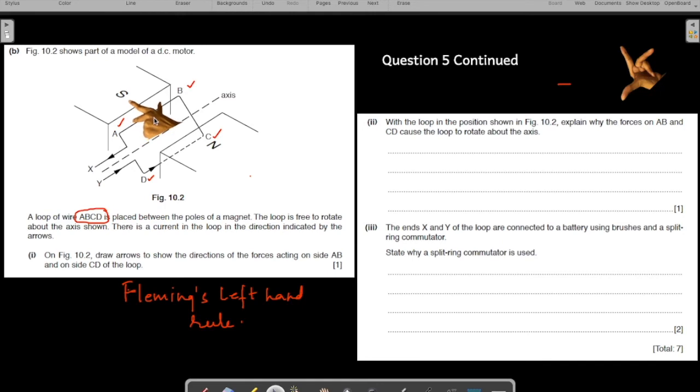Let us apply the Fleming's left hand on the end AB first. How would your first finger go? The first finger, if you see, that's your first finger in the direction of the magnetic field. North to south. The first finger is going north to south. The second finger is going in the direction of the current. And how is your thumb moving? The thumb is going downwards. The force on the AB is in the downward direction.